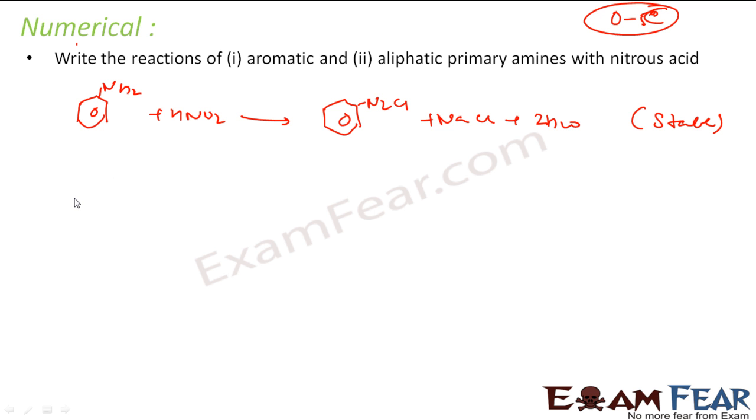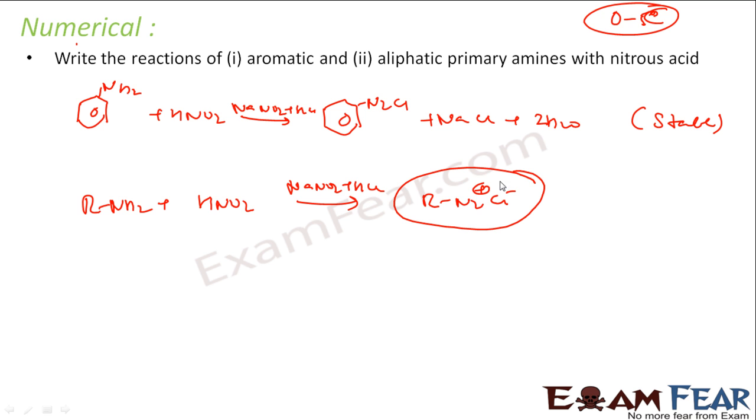If you talk about aliphatic amines, they form unstable diazonium salts. React with HNO2, that is NaNO2 and HCl. What I get is RN2+Cl-, and this is unstable. It will break easily with water to form alcohol. Nitrogen gas will go off and you get HCl. So aliphatic ones are not stable, they immediately break into alcohols, but the aromatic ones are a little stable.